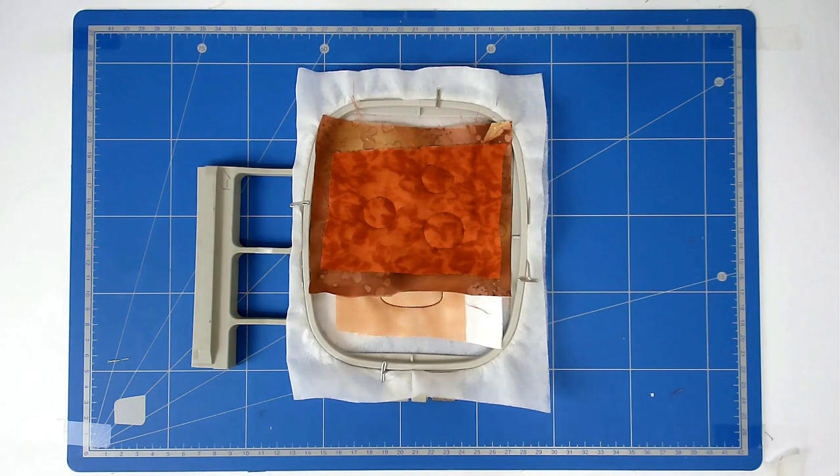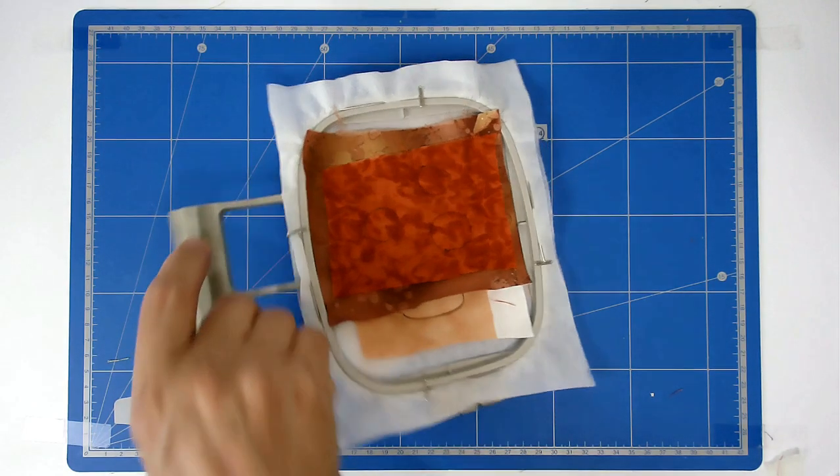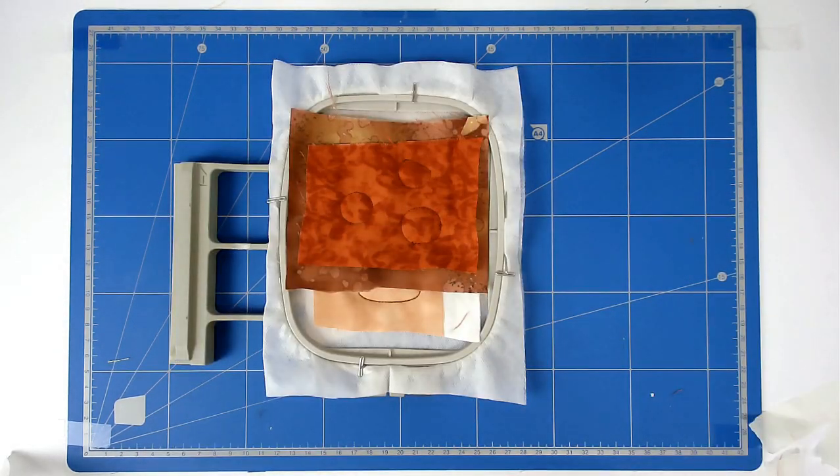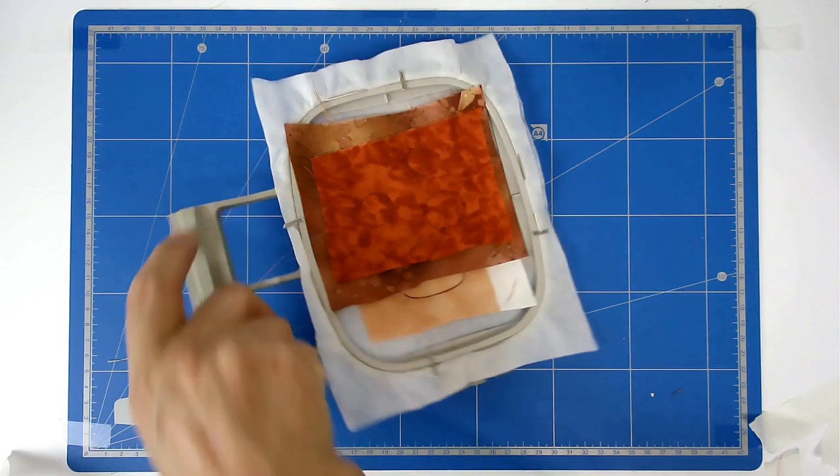You're now going to trim up all your fabrics, both front and back of the hoop. Turn your hoop over. You're going to trim up the excess fabrics from both back and front of your hoop.